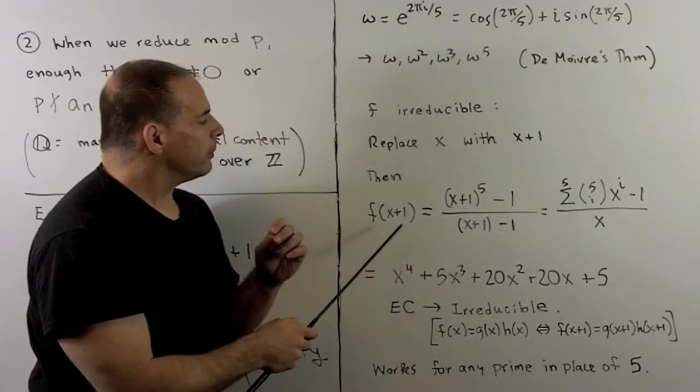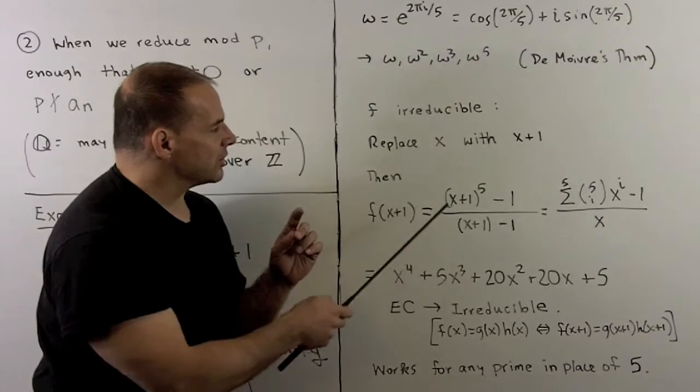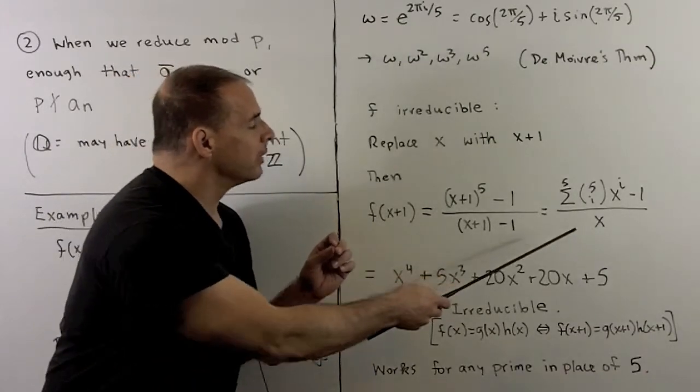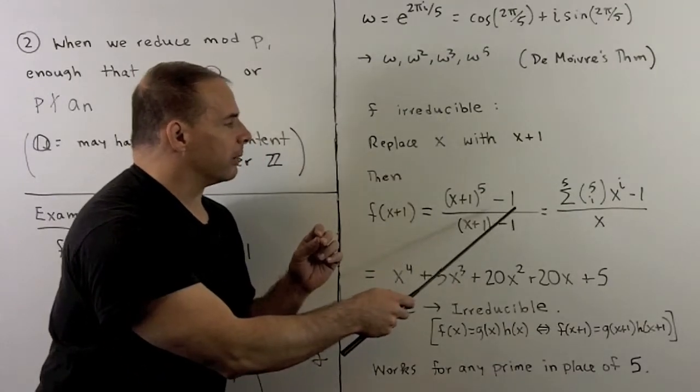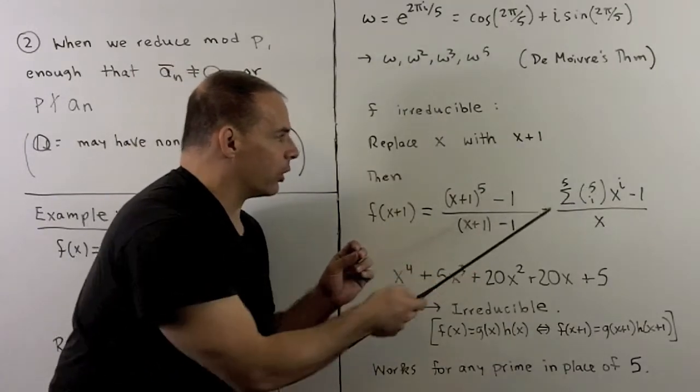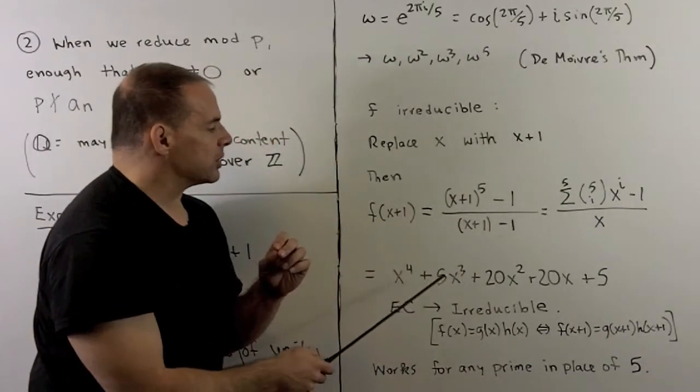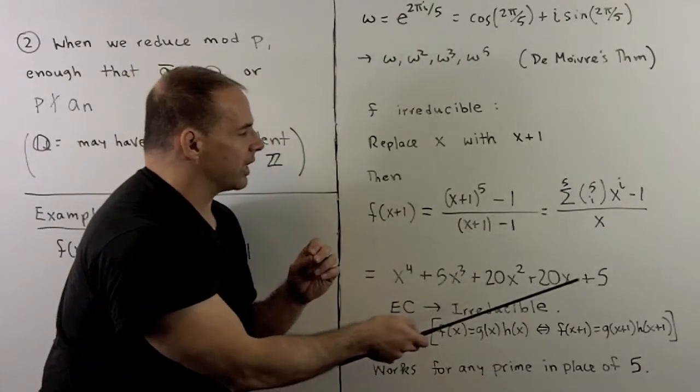So I can rewrite our polynomial as, I'm going to use this expression, we have an x in the denominator. In the numerator, we're going to use the binomial theorem. So we're going to expand using binomial coefficients. When I do that, we have x⁴ + 5x³ + 20x² + 20x + 5.